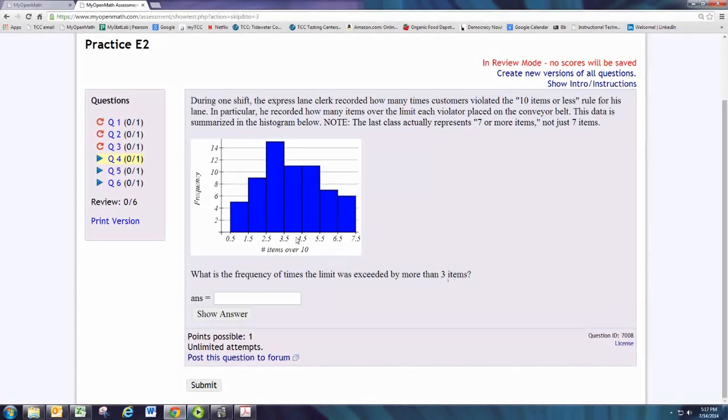Starting with 4, we find on the graph, 4 corresponds to a frequency of 11. 5 corresponds to a frequency of 11 as well, that's 22.